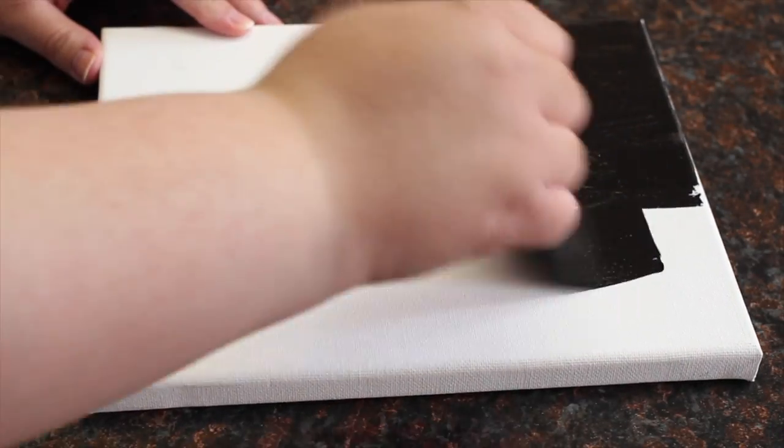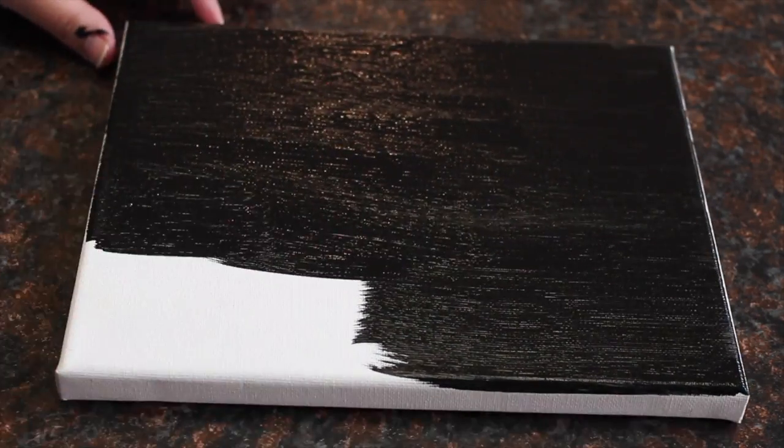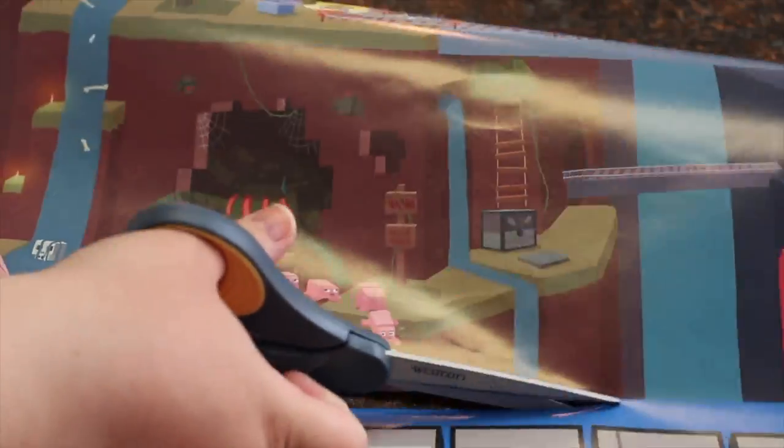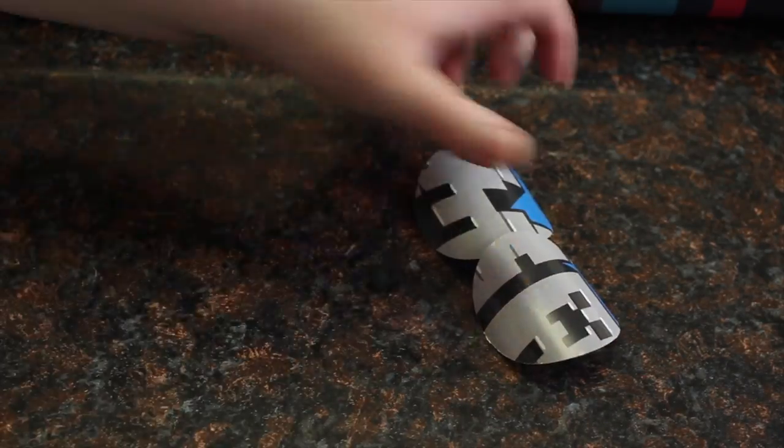Start by painting your canvas, or if you have the option you can buy a black canvas. Set it aside to dry. While the paint is drying, take your poster, magazine, or comic book pages and your circle punches, and cut out the images that you want to put on your canvas.